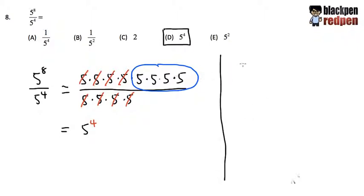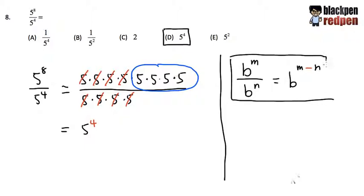So if we have some number b raised to the m power over some number b raised to the n power, this is the division situation just like this right here. What we do is the b, the base, stays the same. And then we just look at the exponent on the top, the m, and then we're going to subtract the exponent on the bottom, the n.